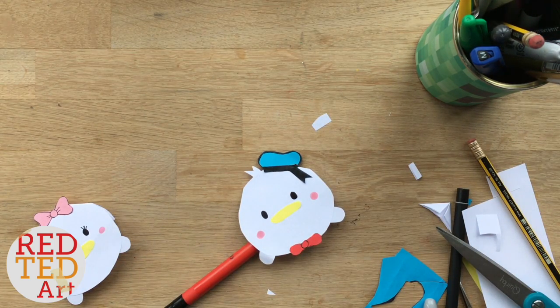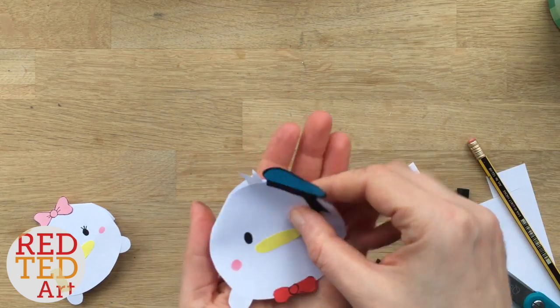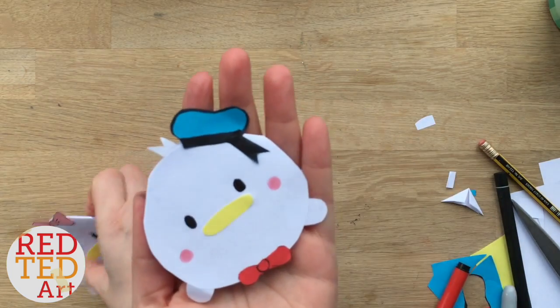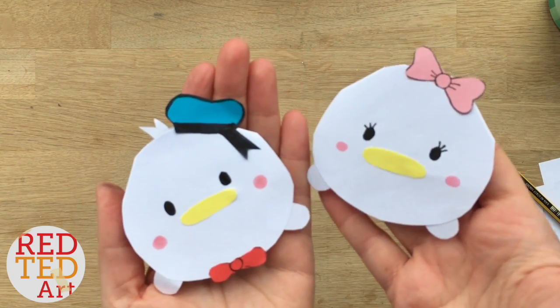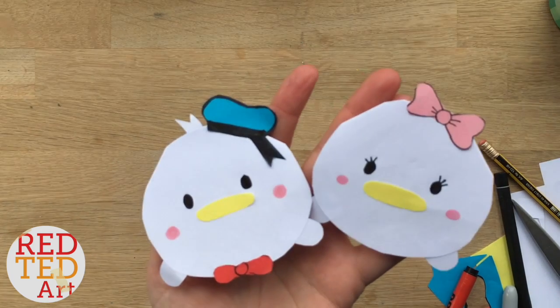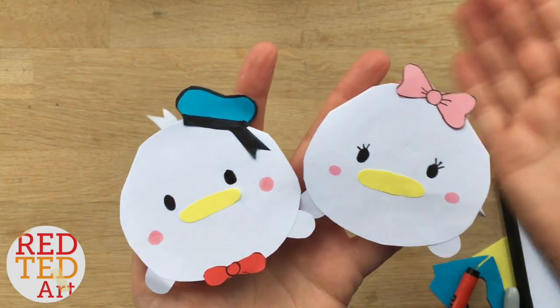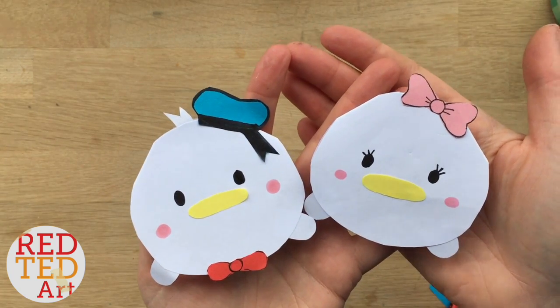That is how very easy it is to make your own Tsum Tsum corner bookmarks. Lovely, aren't they? Daisy and Donald Duck. Anyway, don't forget to add this to your playlist, comment, subscribe, watch the whole video, all that kind of stuff. And hopefully we'll see you again soon. Bye.